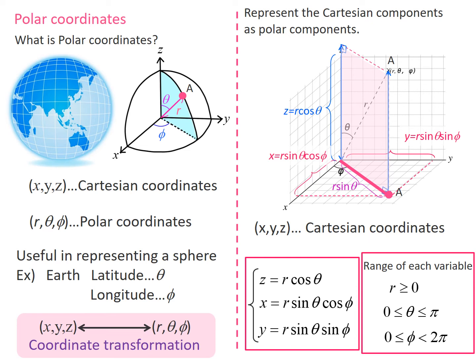x, y, and z range from minus infinity to plus infinity to describe this three-dimensional space, but r, theta, and phi are different.